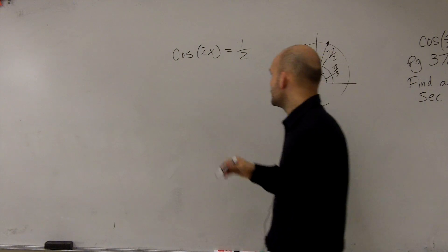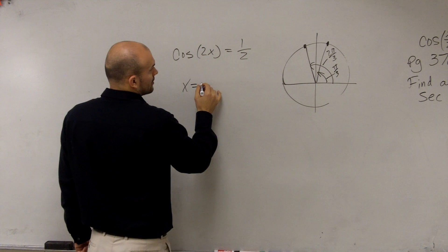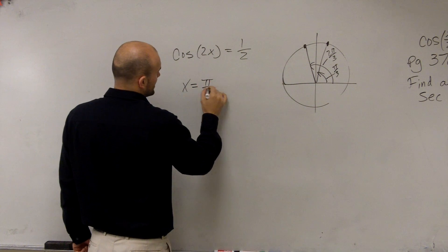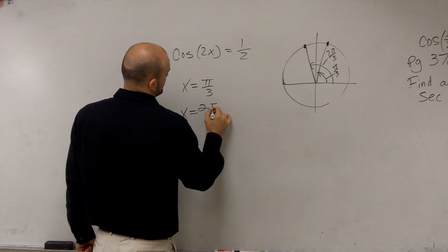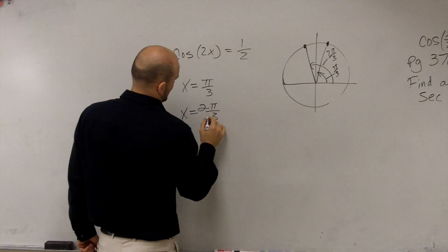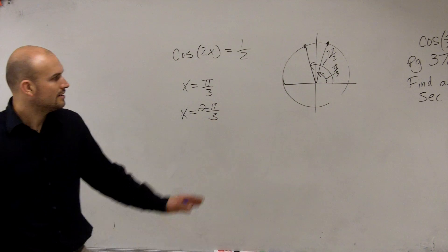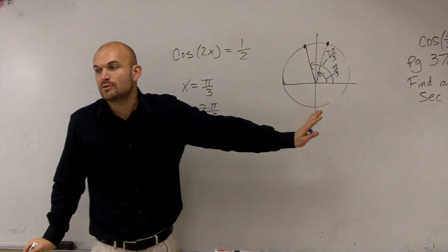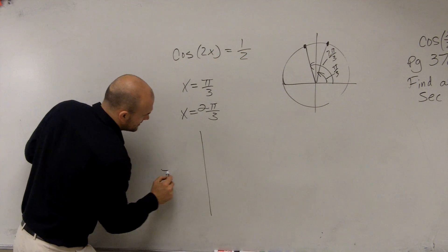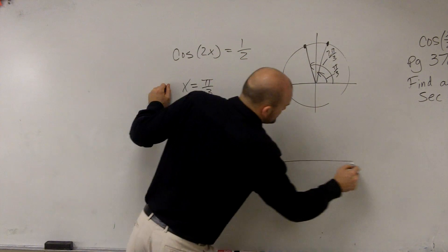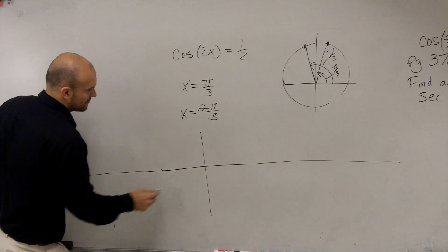So you could say x equals π/3 and x equals 2π/3. Now, I want you to tell me what are all the solutions. I went back through this and explained it to some students last class period.